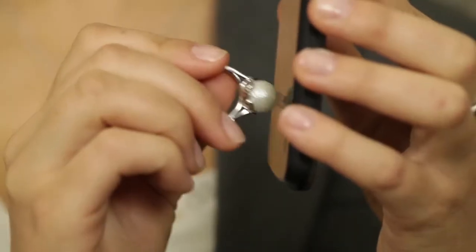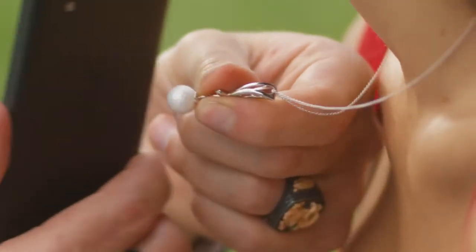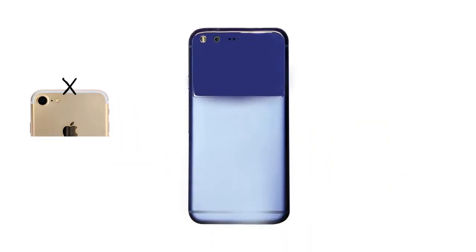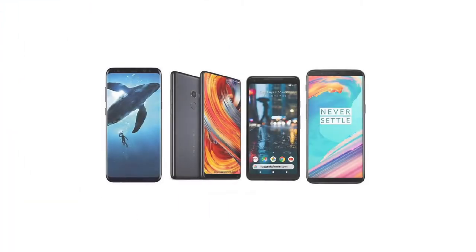Each phone places its NFC reader in a different location. On the iPhone, you will find it here. On the Android, it can be in a different place depending on the manufacturer and will need to be located the first time by tapping different spots on the back of the phone. Note that some phones may be harder to find than others based on brand.